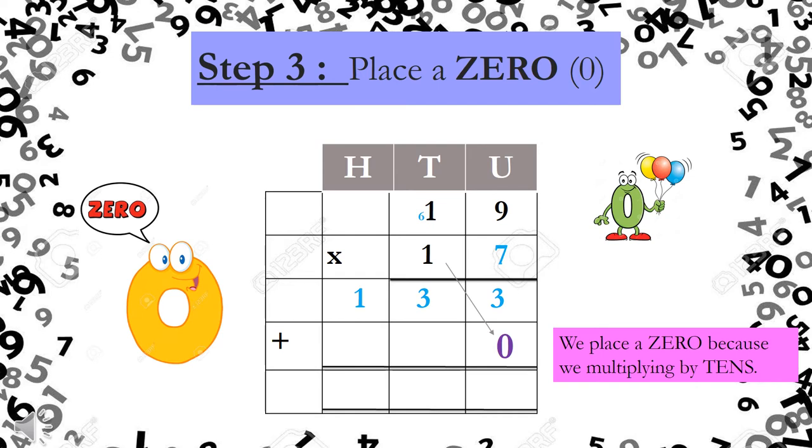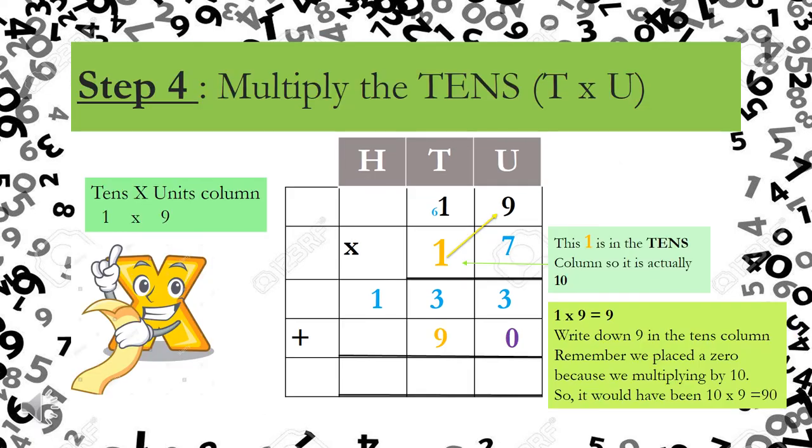Now instead of saying 10 times 9, 10 times 10, I place the zero and then I can say 1 times 9, 1 times 1. We place a zero because we are multiplying by 10. If I multiply any number by 10, the end of the answer will have one zero. If I multiply it by 100, my answer will have two zeros. If I multiply by 1000, my answer will have three zeros. So boys and girls, that is why we placed a zero on my fourth line. So that it makes multiplication easier.